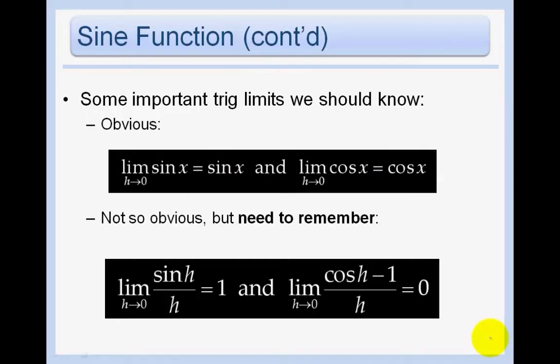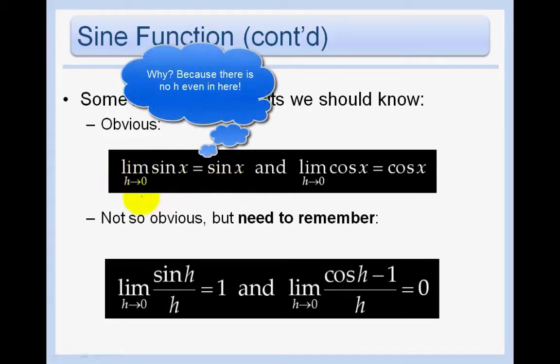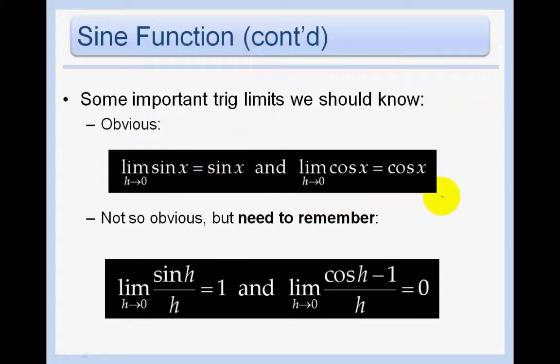So now we're left with a couple questions. First left with these two obvious questions. The limit as h approaches 0 sin x. Well, that's just going to be sin x. Why? Because there's no h even in here. So it's just itself. And the limit as h approaches 0 of cos x is just going to be cos x. So those are obvious. These next two are not so obvious. But you do need to memorize them for the AP exam. So please maybe box them. Go over them again later. But you do need to know both of these. The limit as h approaches 0 of sin h over h equals 1. And the limit as h approaches 0 of cos h minus 1 over h equals 0. So you just have to memorize those.